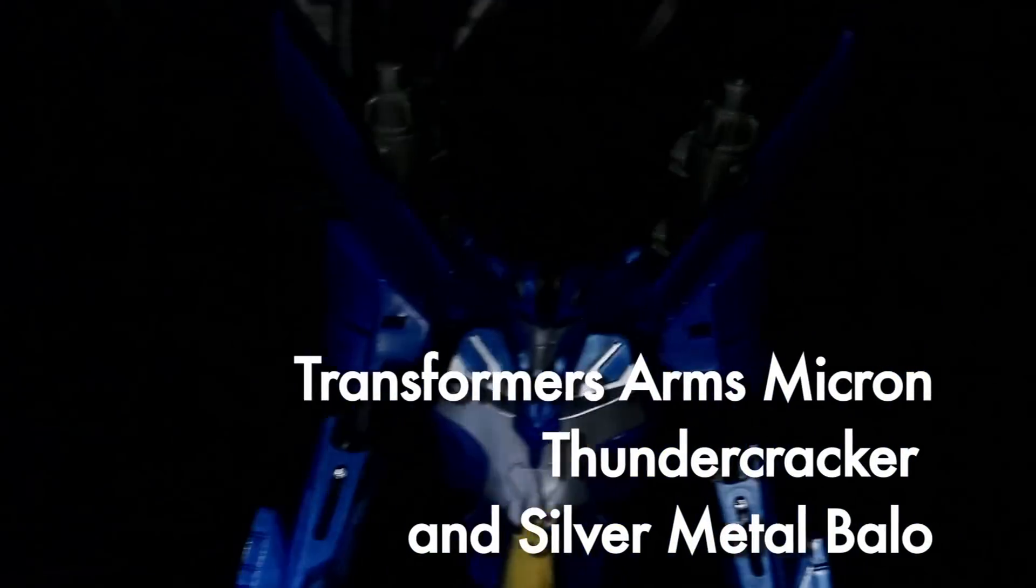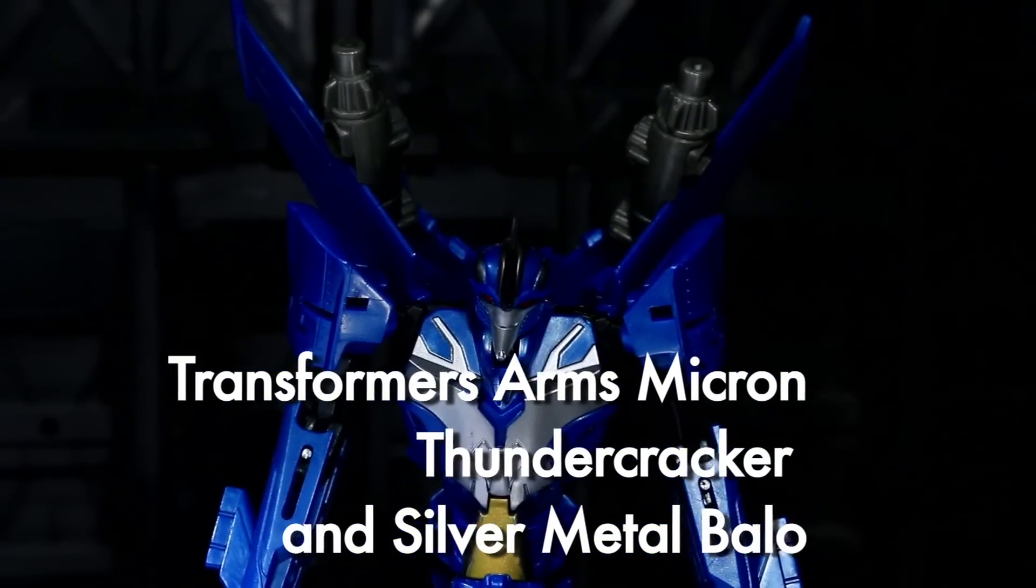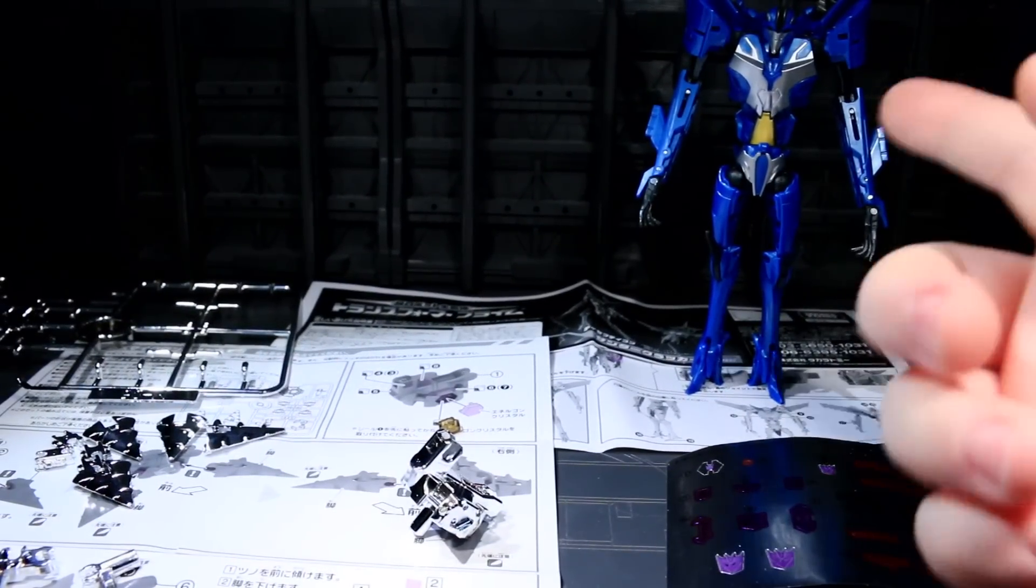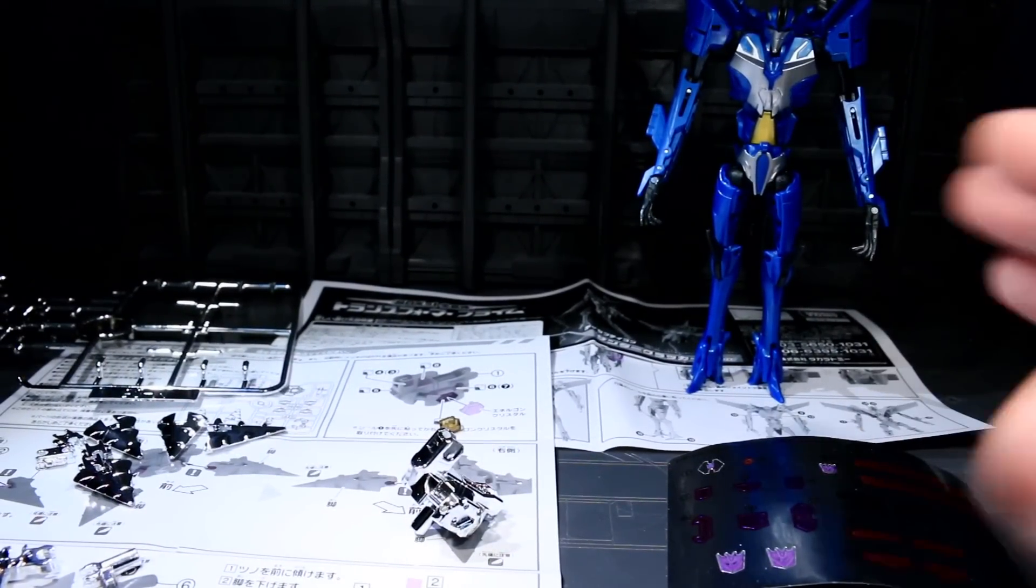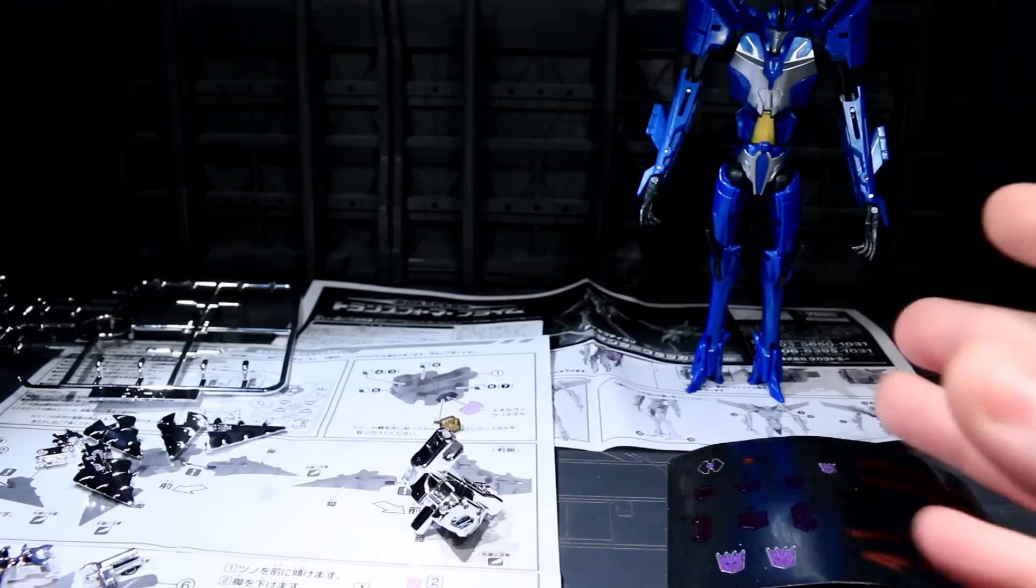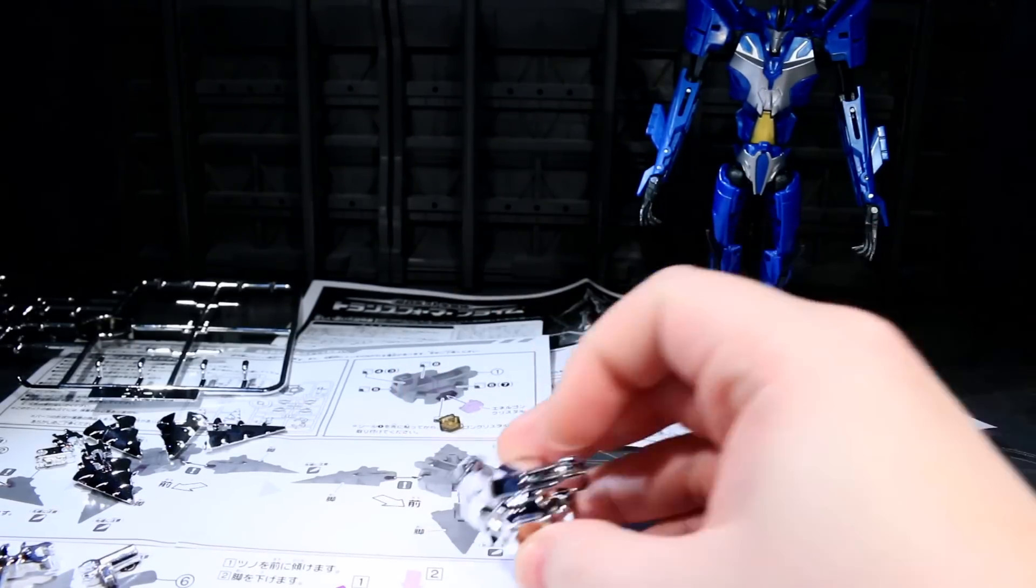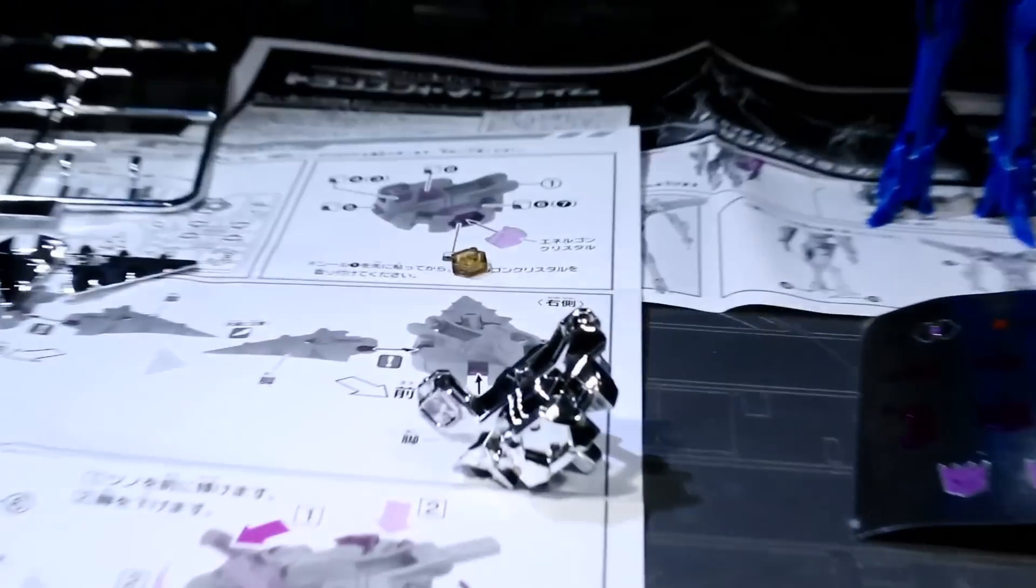This is Arms Micron THUNDERCRACKER. This was an exclusive, I think, to Aeon. I'm not quite sure. He came out around about the same time as that exclusive of the deluxe Optimus Prime as Orion Pax, who I never got because he looked kind of boring, but I'm going to put together his special shiny version of Barrow.